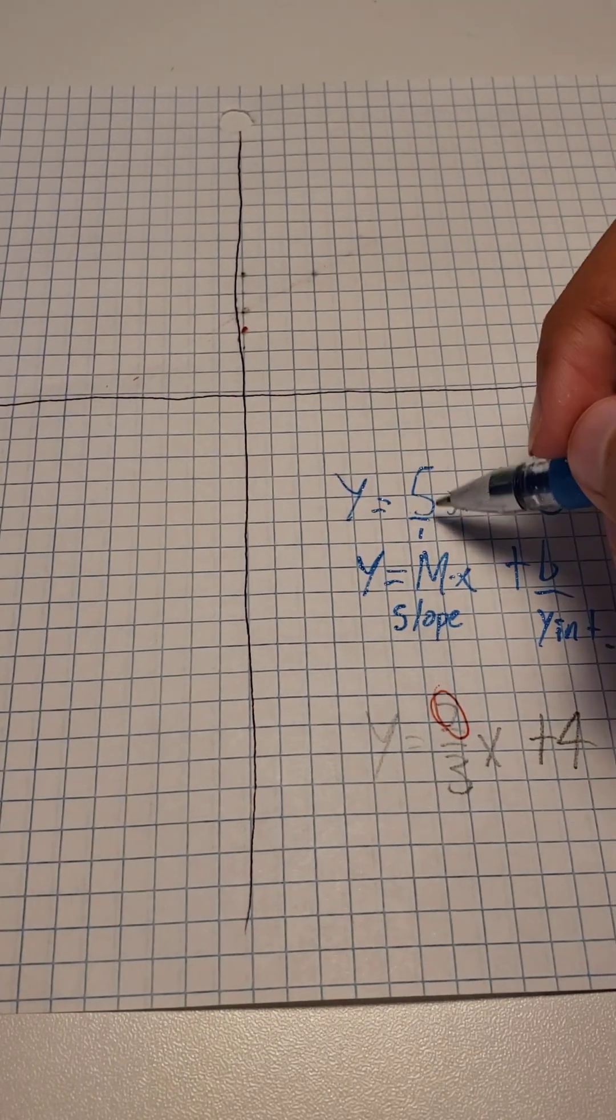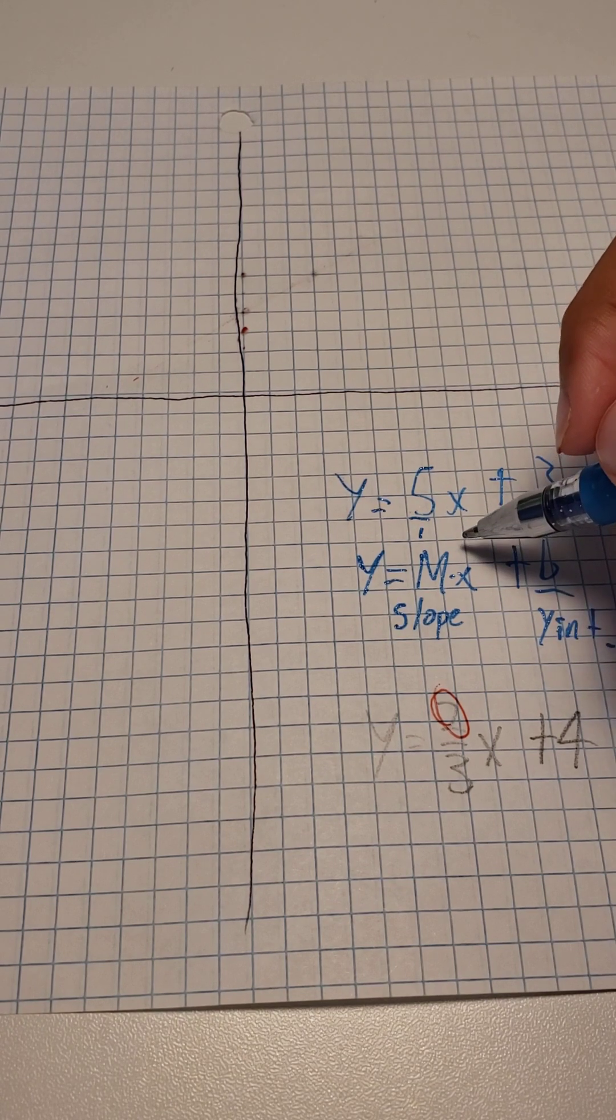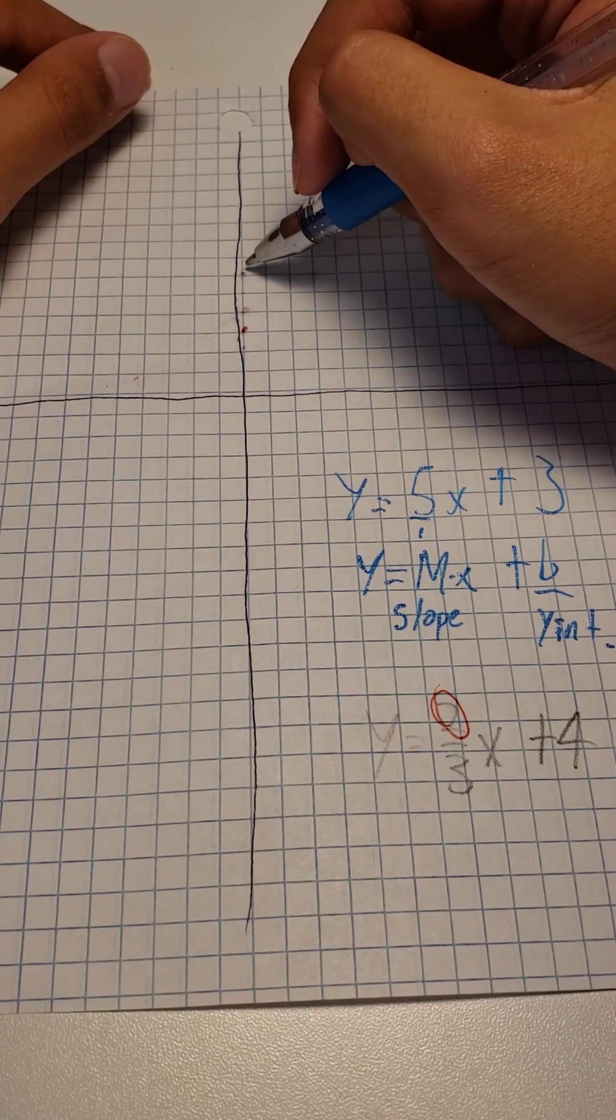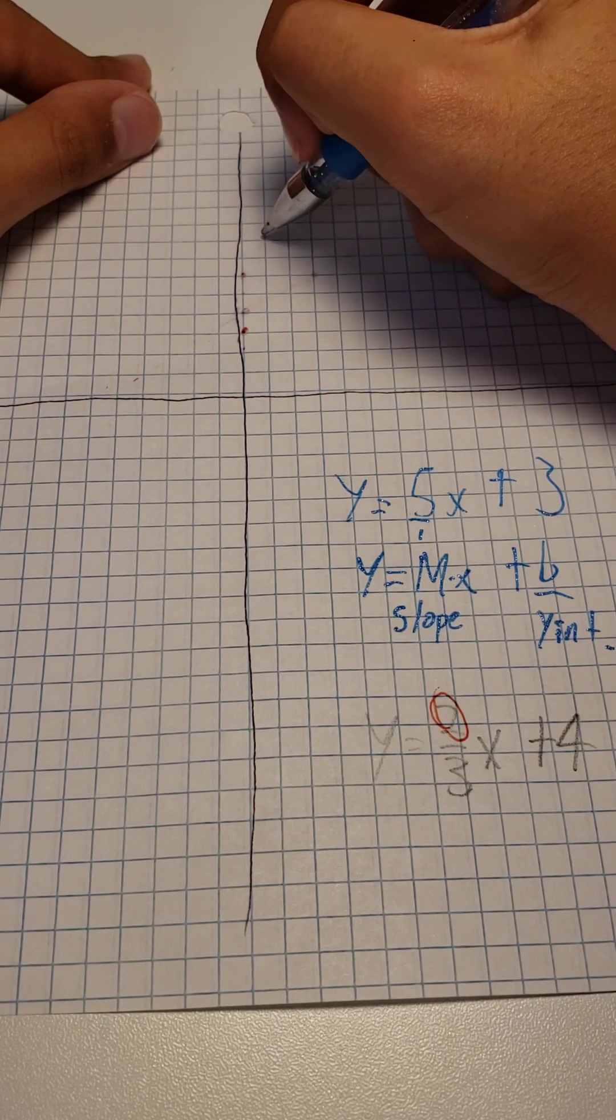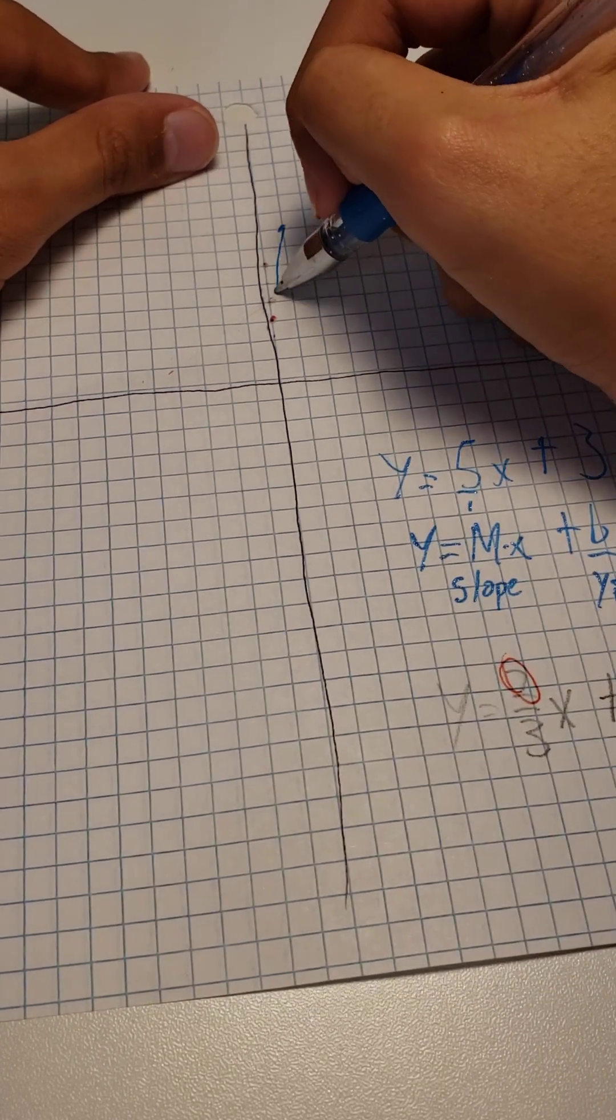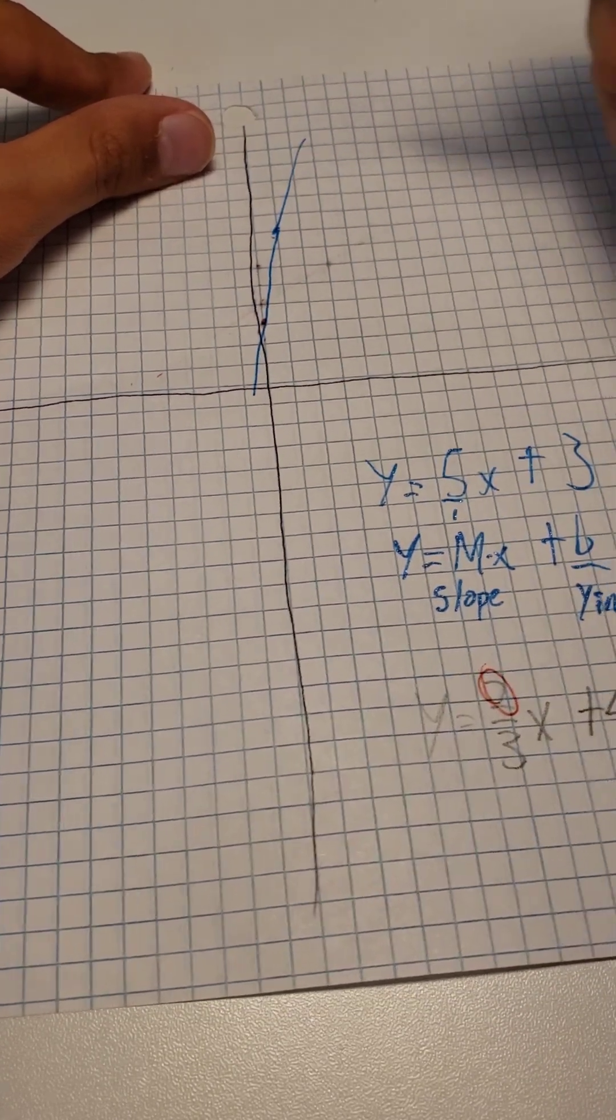So, since there is an understood 1 over here, let's go 1, 2, 3, 4, 5. And then 1. And that will be our line. Very slanted line.